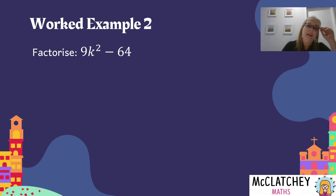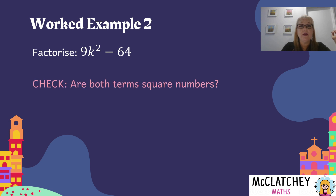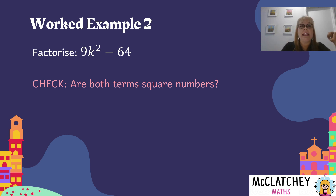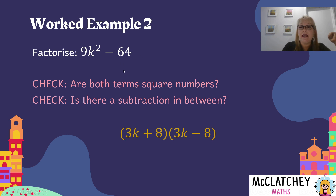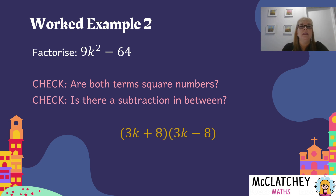Let's try another one. First, do we have two squared numbers? Yes — nine is a squared number, k squared is a squared number, and 64 is a squared number. Is there a subtraction in the middle? Yes. So we know we can follow the pattern. Take the square root of nine, which is three; square root of k squared is k, so it becomes 3k. Square root of 64 is eight. Then remember: plus in the first set of brackets, minus in the second set of brackets. Answer: (3k + 8)(3k - 8). Check your work!